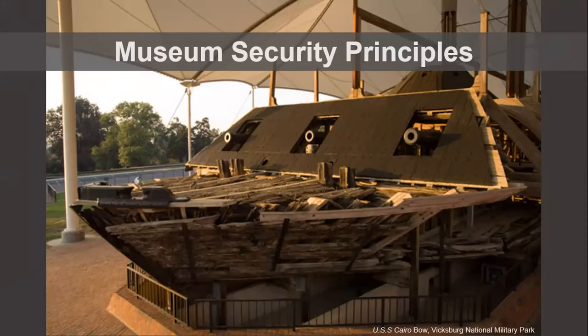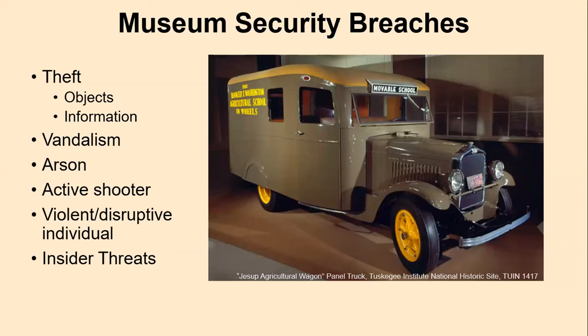When I talk about protecting collections from intruders or from security incidents, I'm not going to be talking about protection against long-term deterioration from agents like ultraviolet radiation, IPM intruders like silverfish, or fires and floods. Rather, when I talk about museum security breaches, I'm talking about a range of undesirable incidents that happen in or around our museum — from arson to violence. But in particular, I want to focus on the museum-specific breaches: unauthorized or undesirable access, which include theft and vandalism.